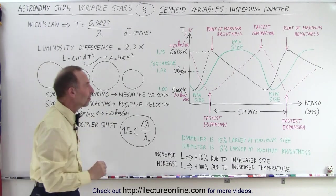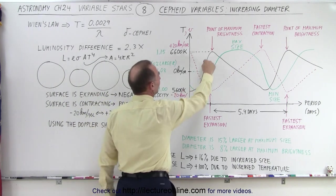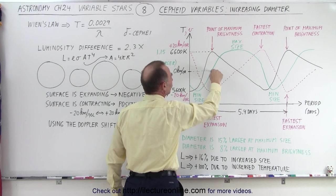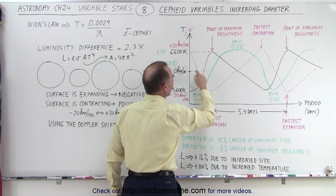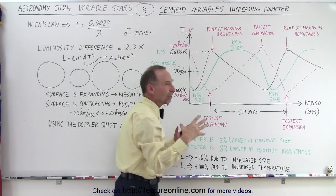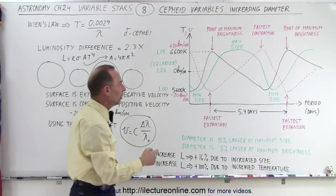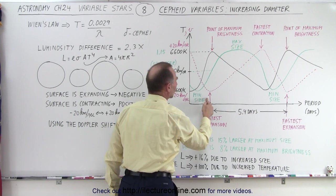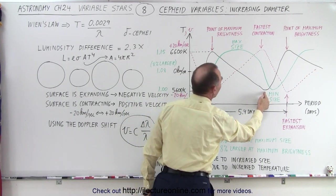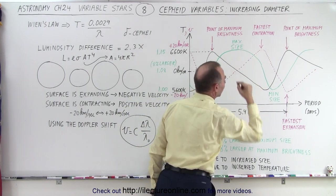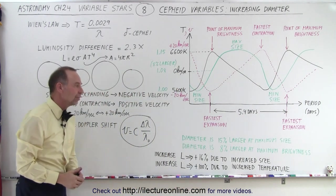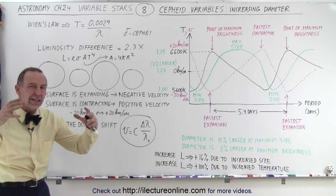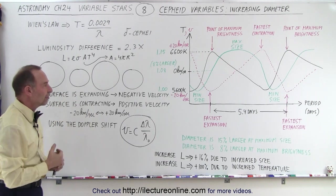But at least now we realize the relationship between the brightest point and the dimmest point, primarily due to the change in temperature, somewhat due to the change in size. And notice it also coincides with the maximum speed of the surface of the star. When we reach the maximum brightness, the star is expanding at its fastest rate. When we reach the minimum brightness, the star is contracting at its maximum speed or maximum pace. And so those are the relationships between what happens physically to the star, the cepheid variable.